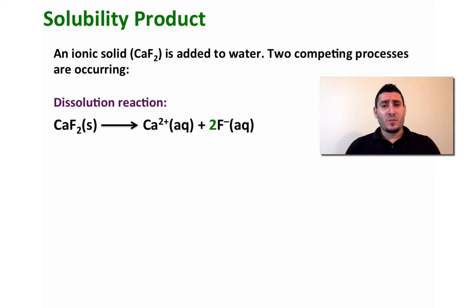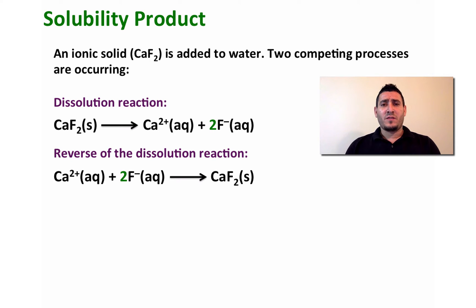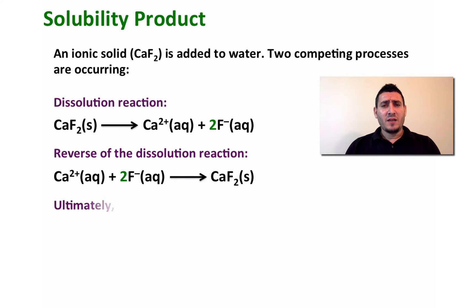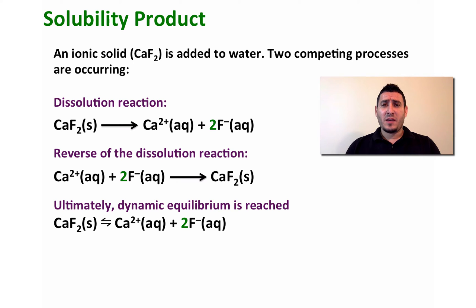Another competing reaction is the formation of the solid again. The cation will have an electrostatic attraction to the anions — the fluoride — and then form the solid again, calcium fluoride. Ultimately, a dynamic equilibrium will be established, and therefore the solid will give the cation and the anions, and vice versa.